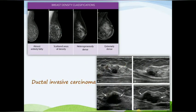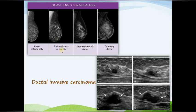This is the image for ductal invasive carcinoma — we can see this on ultrasound. This is the chart for breast density classification: this is the normal breast, this shows scattered areas, this is heterogeneously dense, and this is extremely dense, which indicates some tumor or other abnormalities.